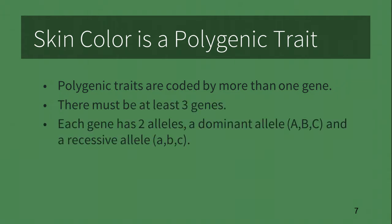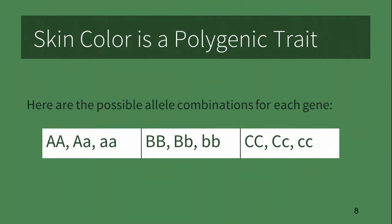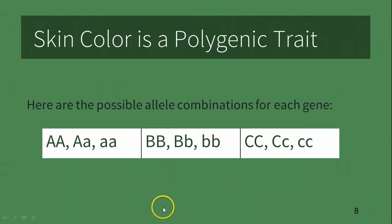Remember, each gene has two alleles or alternate forms. A dominant allele — uppercase A, B, or C — codes for dark skin. And a recessive allele — lowercase a, b, and c — codes for light skin. The genotypes for each can be homozygous dominant, represented by uppercase AA, BB, CC; heterozygous, as in Aa, Bb, and Cc; or homozygous recessive, represented by two small a's, two small b's, and two small c's.